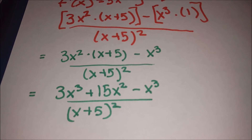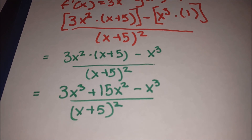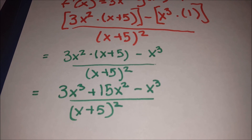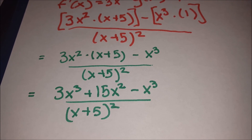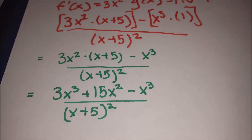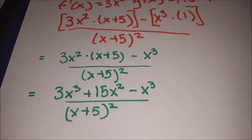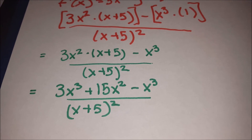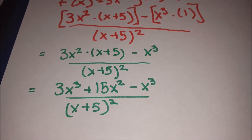Simplifying and multiplying out, we have 3x cubed plus 15x squared minus x cubed. Subtracting x cubed from 3x cubed gives 2x cubed plus 15x squared, all divided by x plus 5 quantity squared.